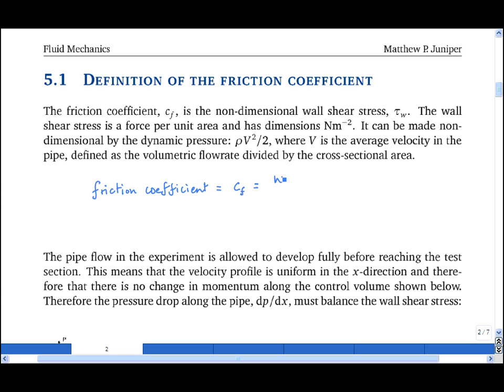It's equal to the wall shear stress divided by the dynamic pressure. So that's equal to tau w, the wall shear stress, divided by a half rho v squared, where v is the average velocity in the pipe.